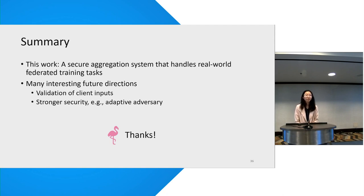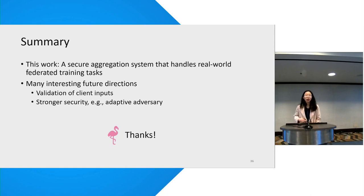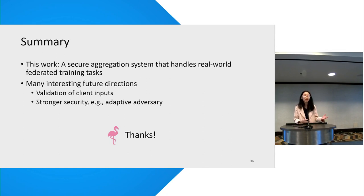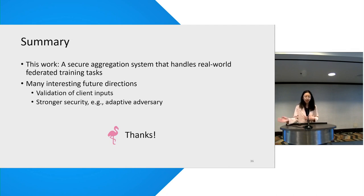Q: What is the complexity of the decryptor? Does it depend on the number of clients? A: Great question. Our protocol highly relies on the concrete parameters in the training process. For example, each batch in each round of the protocol only requires around 100 to 200 clients, which is relatively small compared to the vector length. So the decryptors perform decryption for, say, 200 clients, which is not expensive compared to masking a vector with 10,000 dimensions or something like that.